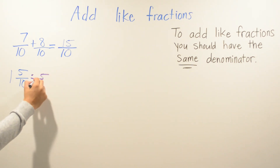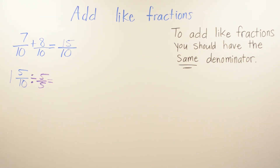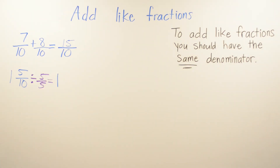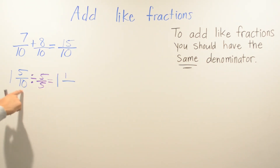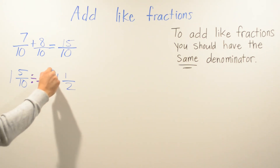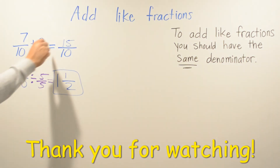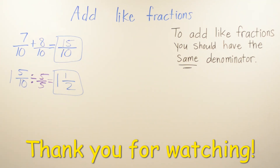We can simplify 5/10 by 5 because 5 goes into both numbers. We leave the 1 as itself: 5 goes into 5 one time, and 5 goes into 10 two times. So your answer can be 1 and 1 half as a mixed number, or 15 over 10 as an improper fraction.